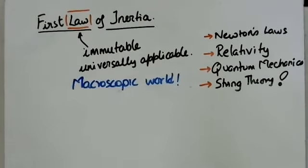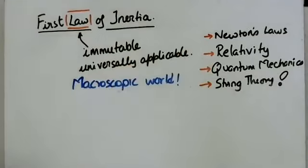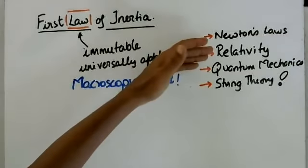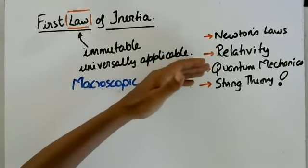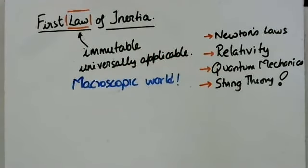String theory, just by the way, is a fairly complicated theoretical structure for which there is no experimental proof. Relativity and quantum mechanics, on the other hand, have a lot of experimental evidence — in fact, they are also applied fields. GPS, as we know it, is not possible without relativity. And computers, hard drives and so on cannot work without the findings of quantum mechanics. So that kind of covers the aspect of why we still do classical mechanics in school.